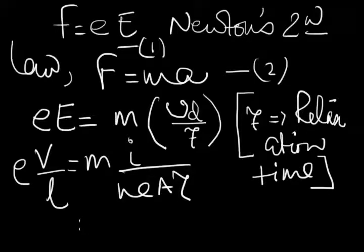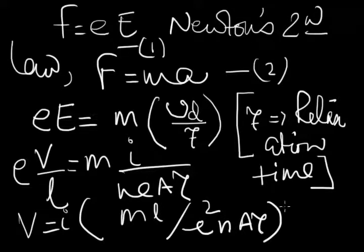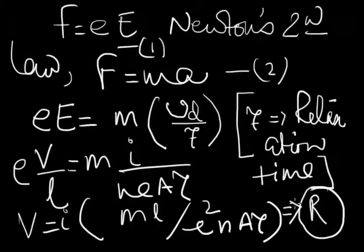If I segregate V and I, what I have for V is I into this kind of thing which states mL/(Ne²Aτ). You see this is a constant whose tendency is to oppose current, and we name this whole constant as resistance. It's very important to learn why this constant was called resistance - because the tendency of the constant stops current.